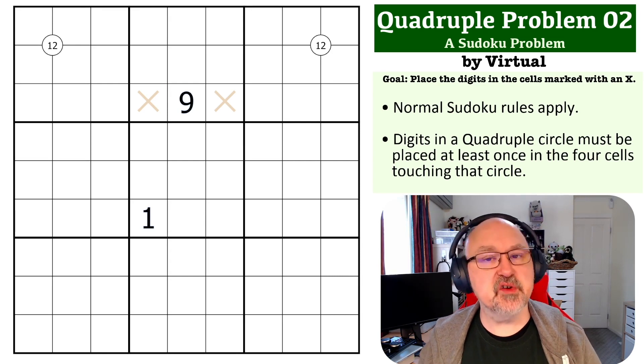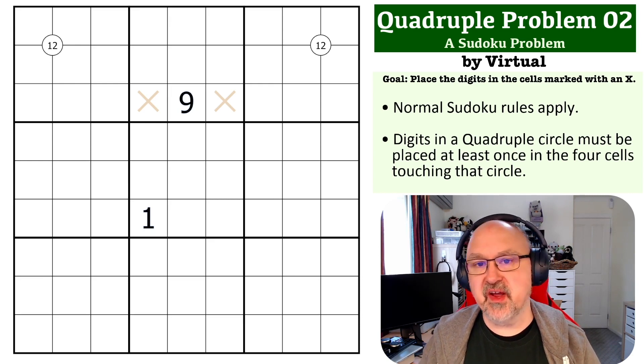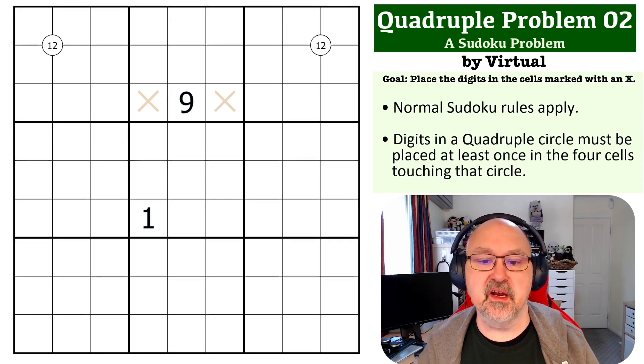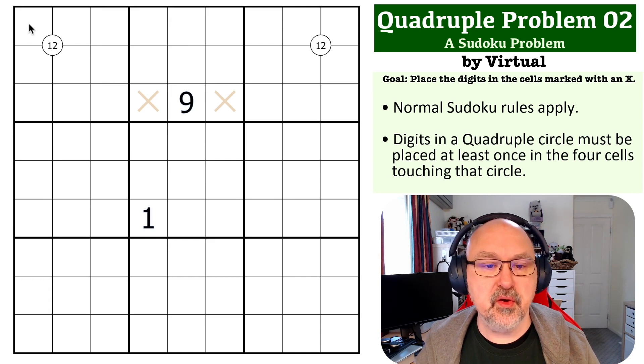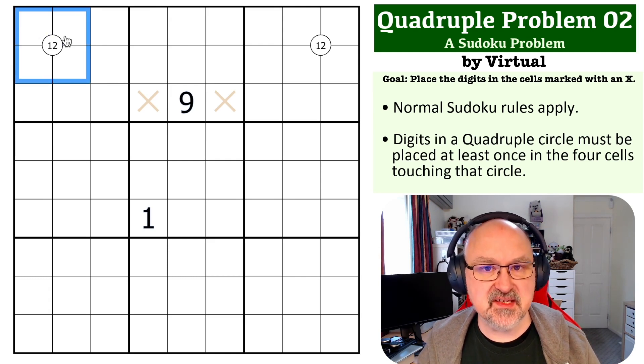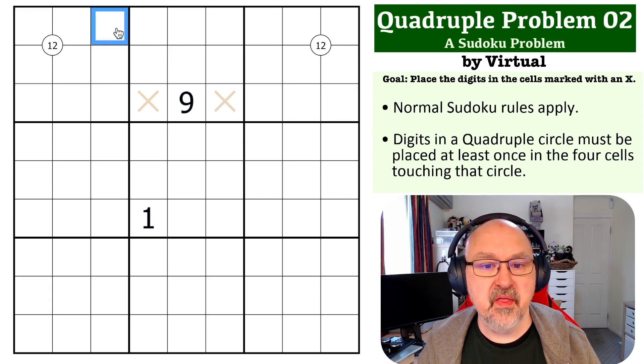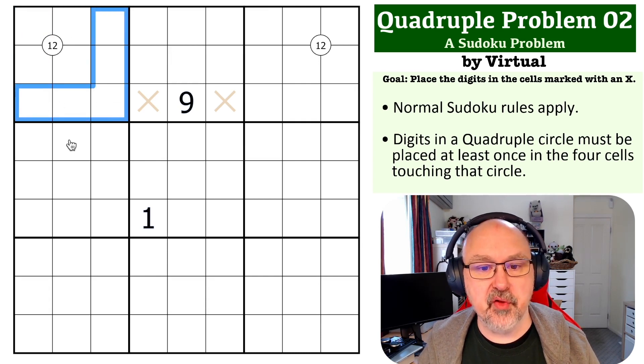Okay, so this is quite a common trick in quadruples and is often used to find a break-in in a quadruples puzzle. So because the digits one and two must be placed in these cells in box one, they cannot be placed in any of those cells.